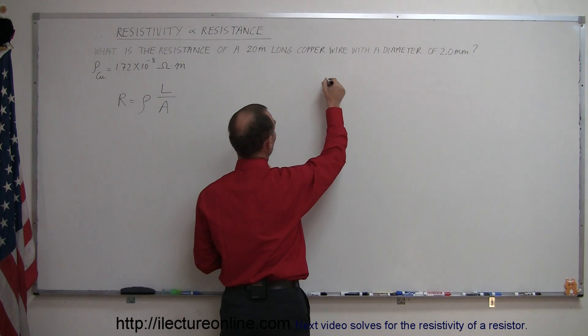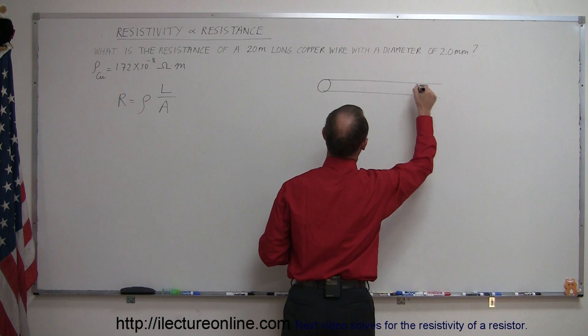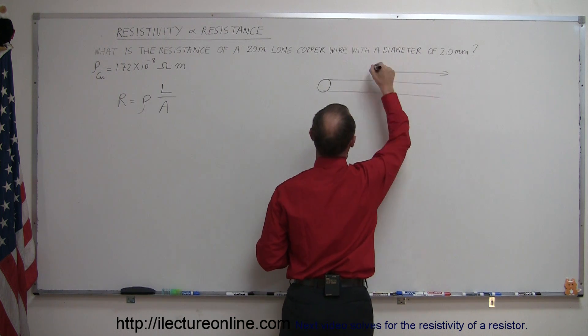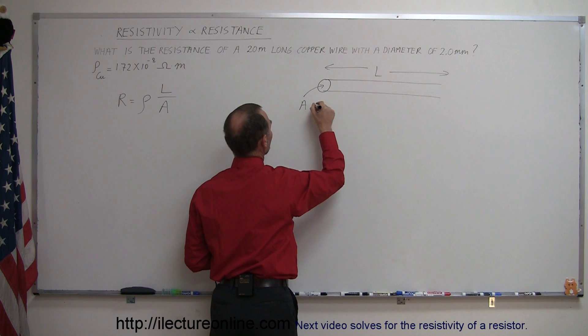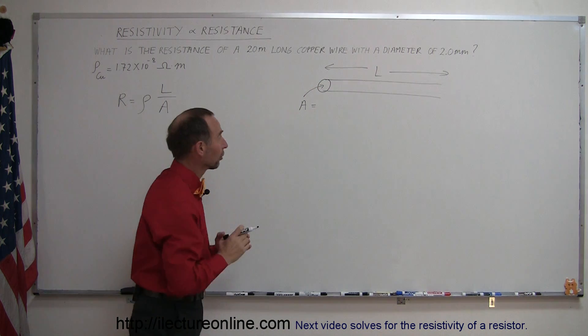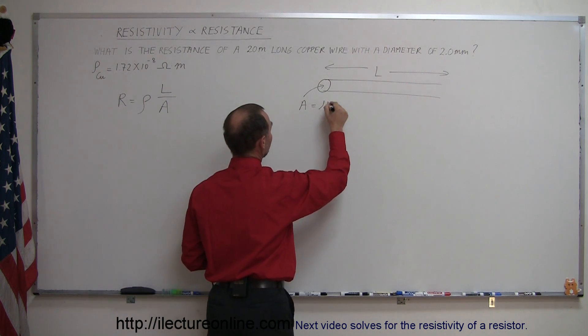So when you think about a copper wire, that's basically a long cylinder with length L and a cross-sectional area A. The cross-sectional area of a cylindrical object is equal to πR².